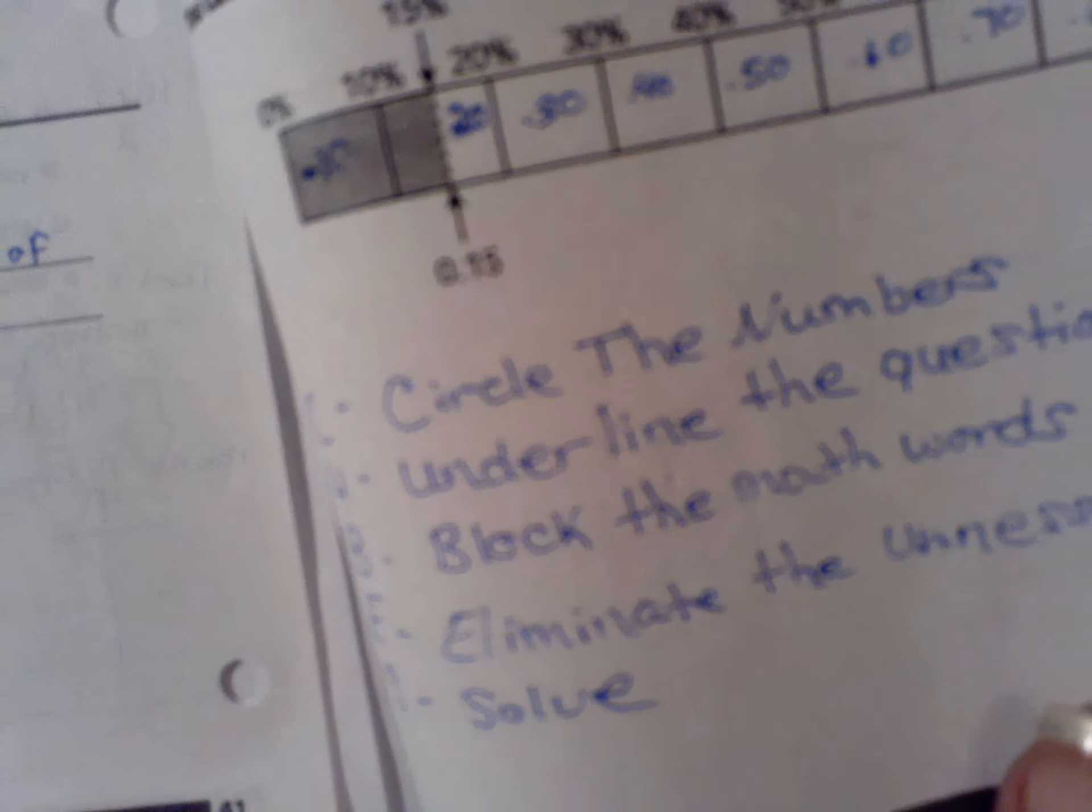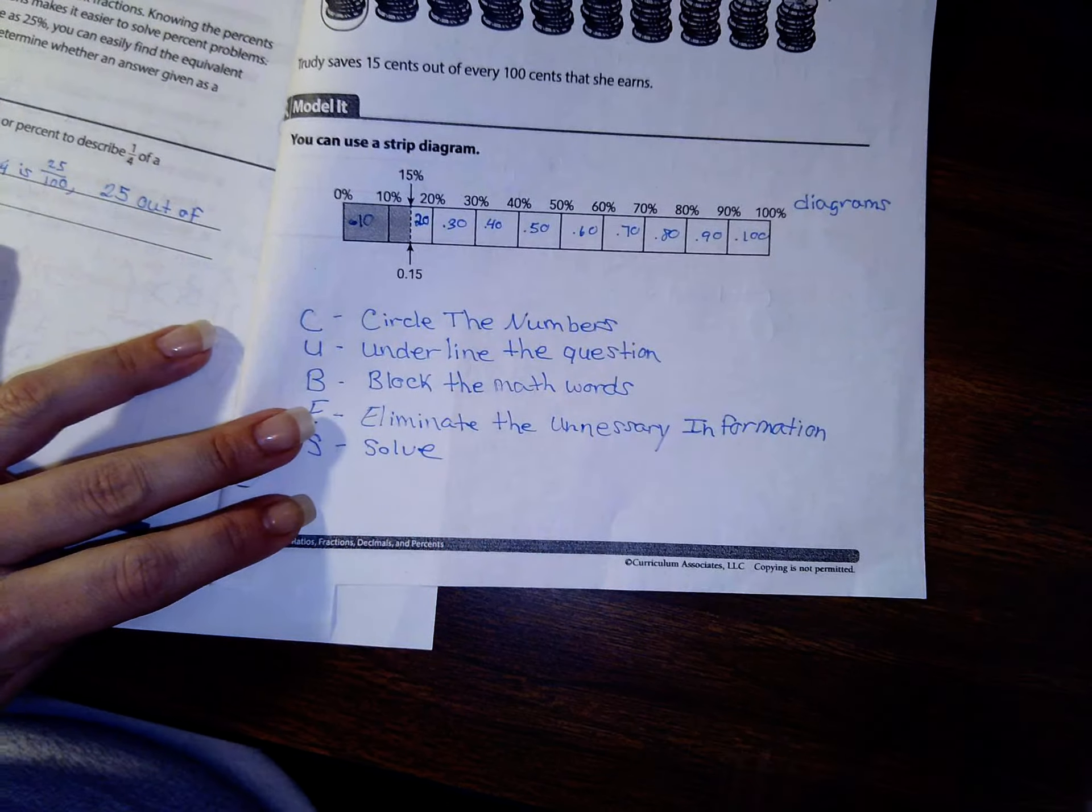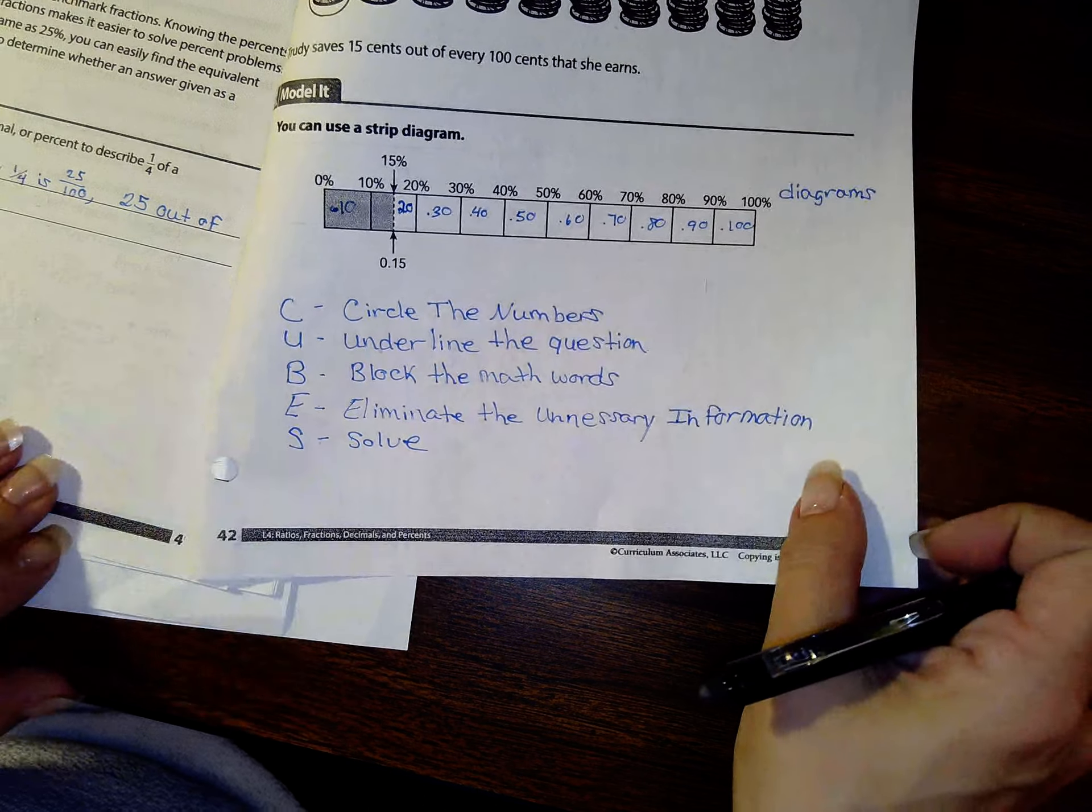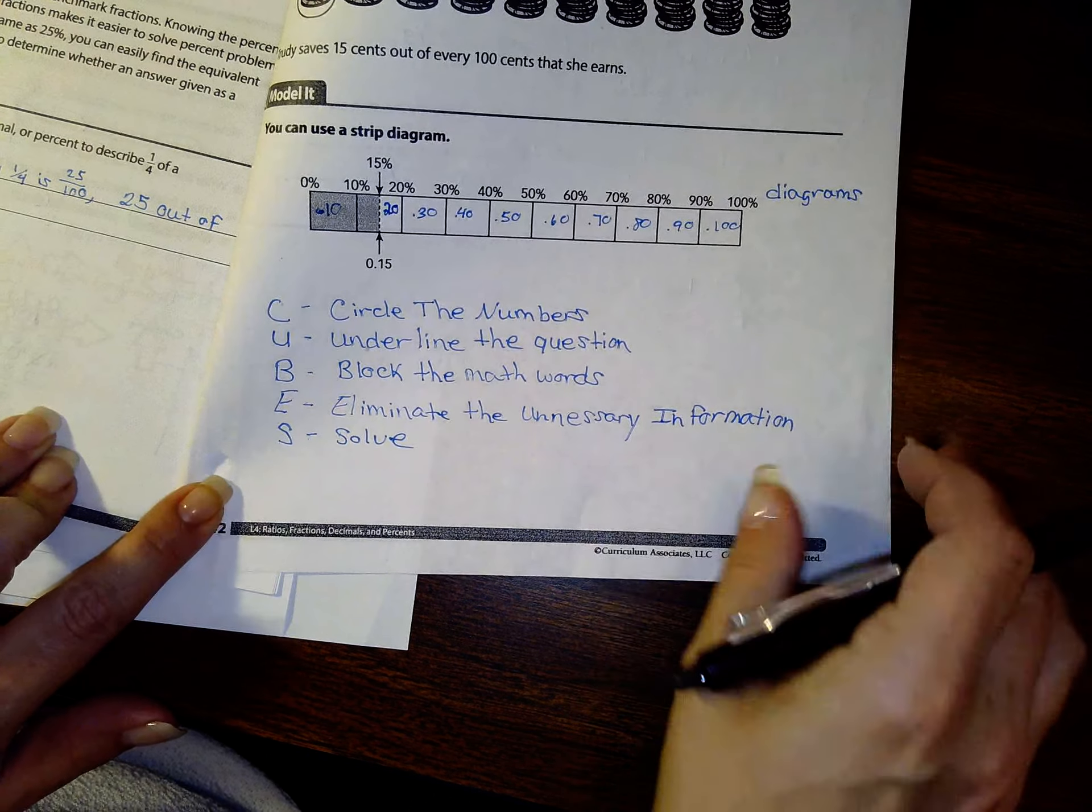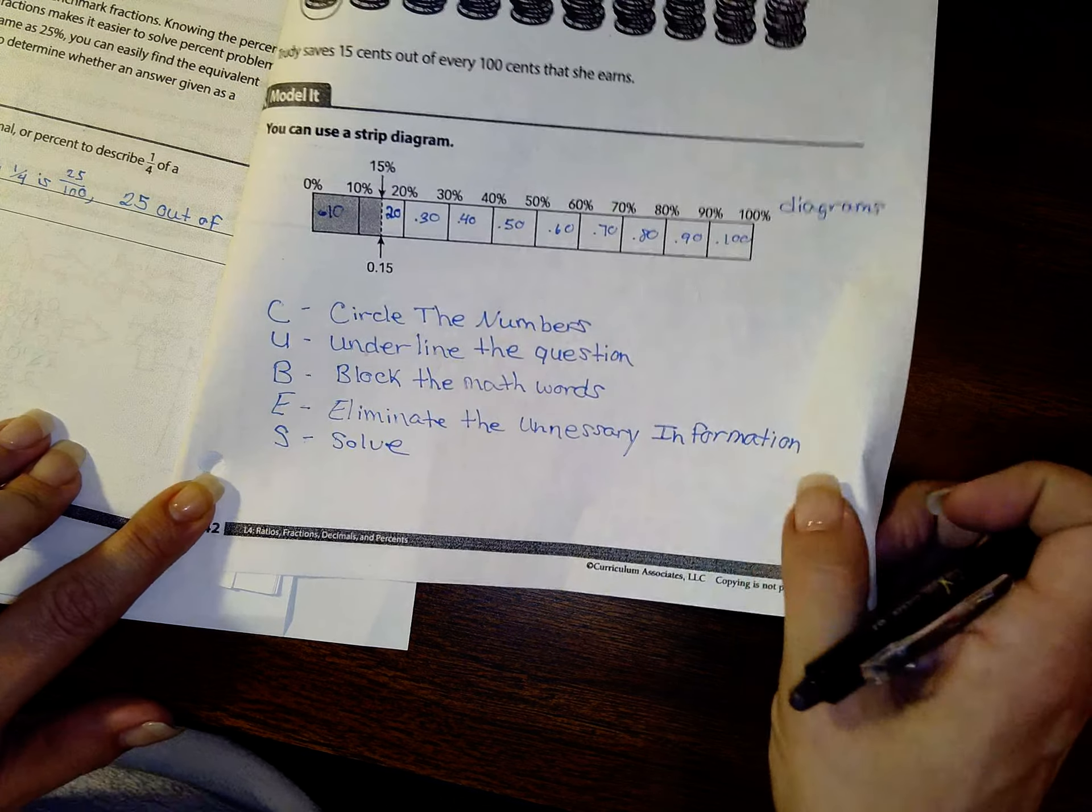And then I'm going to underline the question. It's a little bit blurry, I'm sorry. Underline the question and block the math words. And there's not any eliminating unnecessary information because it is necessary.